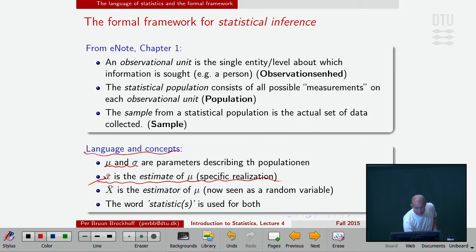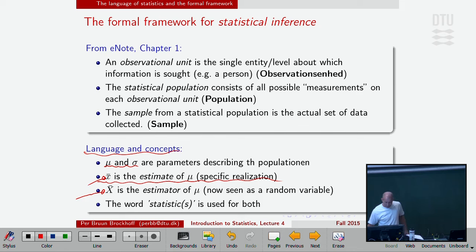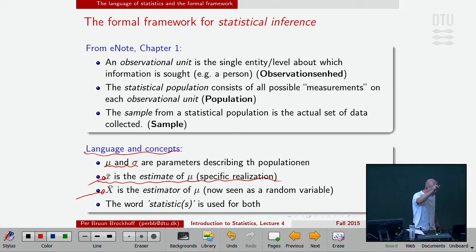This morning we estimate the mu by the mean, for instance. That's a specific realization, then it's a small letter x. We may sometimes, to express some of the theoretical results giving us the tools, talk about the mean x-bar as capital X-bar. That's when we see it as a random variable, which it is of course, apart from when we have the actual numbers.